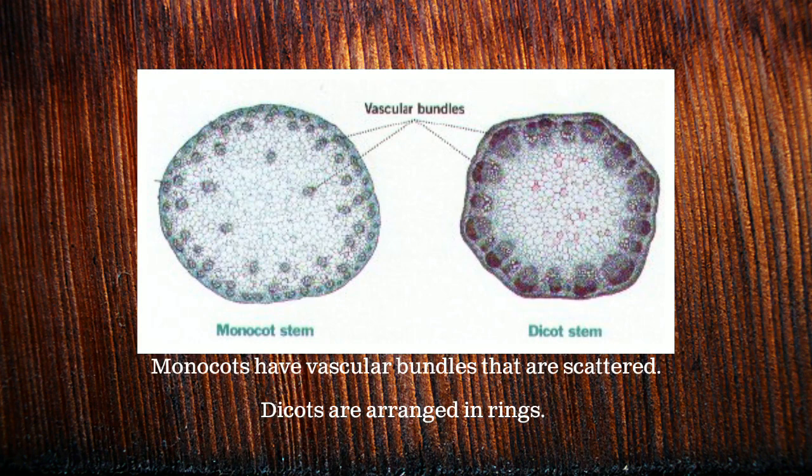If we were to look at a cross-section of the stems of both plants, monocots have vascular bundles — a.k.a. xylem and phloem — in a scattered arrangement, while dicots' vascular bundles are arranged in rings.